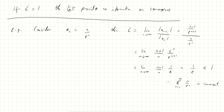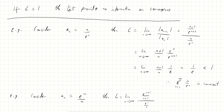Because our ratio test gave L less than one. Similarly, consider a_n = e^n over n — the same thing but flipped. Then L equals the limit as n tends to infinity of e^{n+1}/(n+1) divided by e^n/n. Unsurprisingly, we get the reciprocal of our previous limit, which is just e. Since e is greater than one, the sum from n=1 to infinity of e^n/n is divergent.